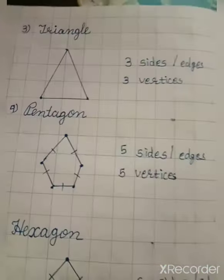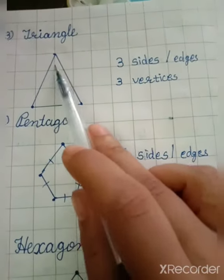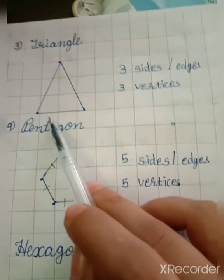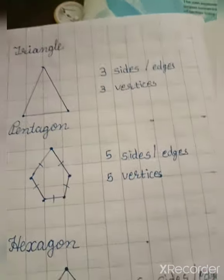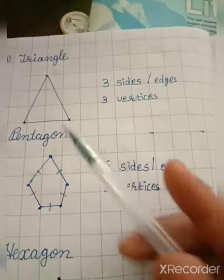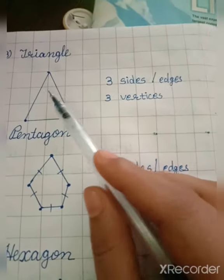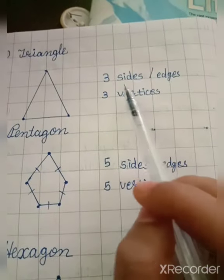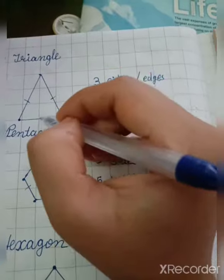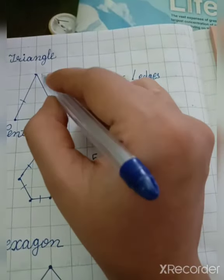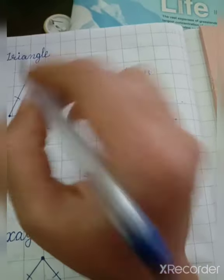Now you will draw a triangle. A triangle shape — you have seen pizza, that is a triangle shape. A triangle has three sides: one, two, and three. And it has three vertices — so write three sides and three vertices.